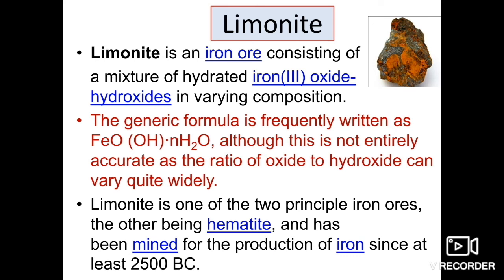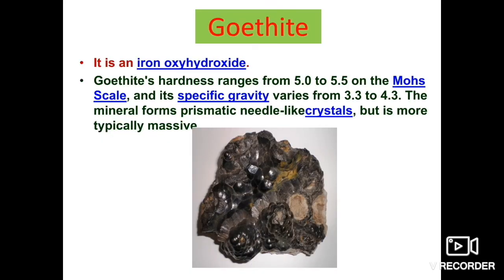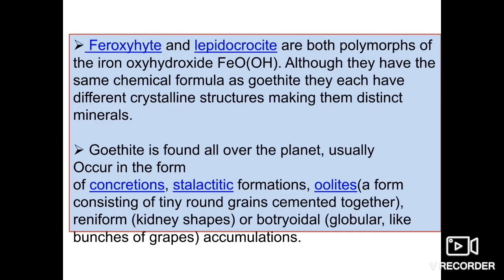The next one is goethite, an iron oxy-hydroxide mineral. Its hardness ranges from 5 to 5.5 on the Mohs scale of hardness. Specific gravity varies from 3.3 to 4.3. The mineral forms prismatic needle-like crystals but is more typically massive in form. Its formula is FeO(OH).